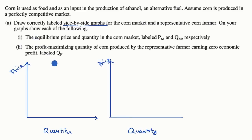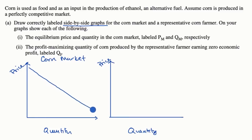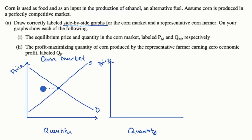Let's draw the corn market. Our demand curve looks something like this — when price is high, low quantity demanded; when price is low, high quantity demanded. Supply goes the other way around, so our supply curve looks something like this. The intersection gives us our equilibrium price, P sub M, and our equilibrium quantity, Q sub M.